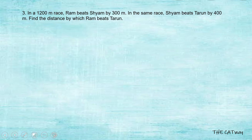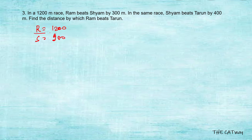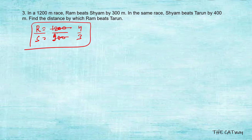The third question: in a 1200 meter race, Ram beats Sham by 300 meters. So when Ram completed 1200 meters, Sham completed only 900 meters. The ratio of their speeds is 4:3, because in an equal time Ram covered 1200 and Sham covered 900.